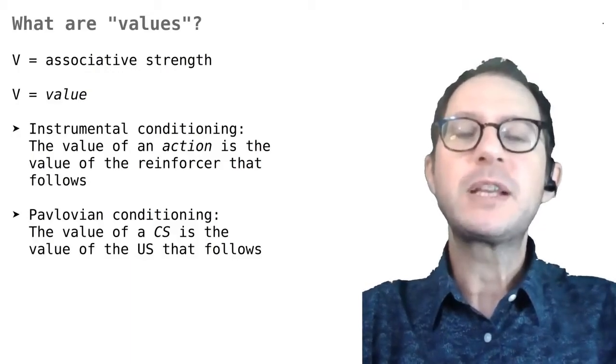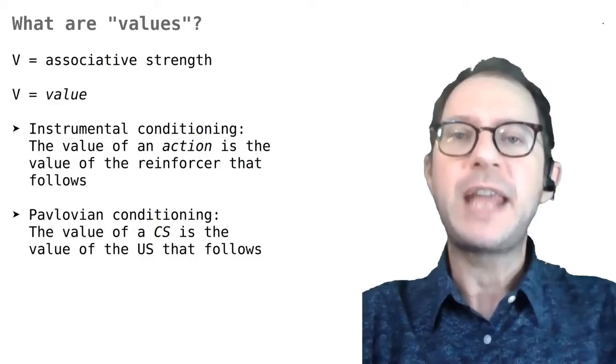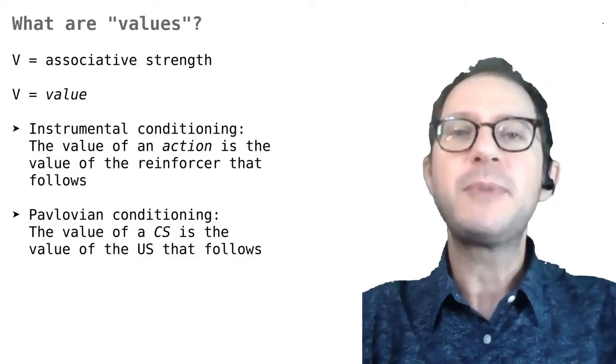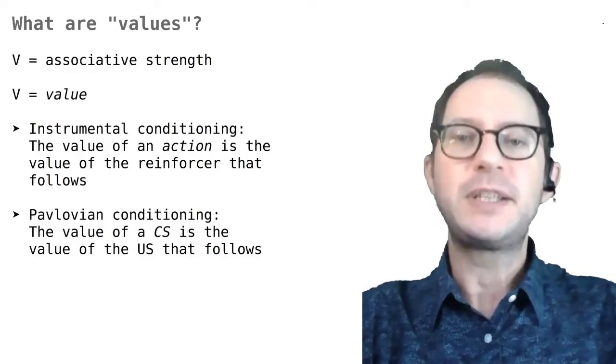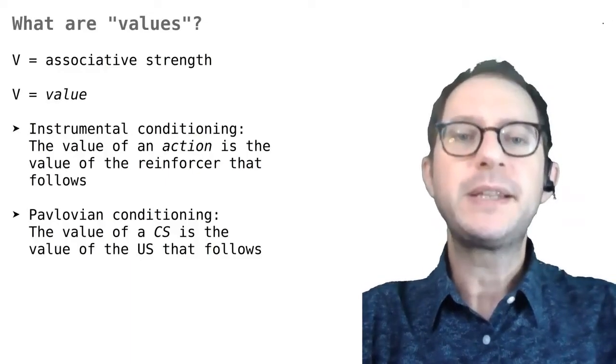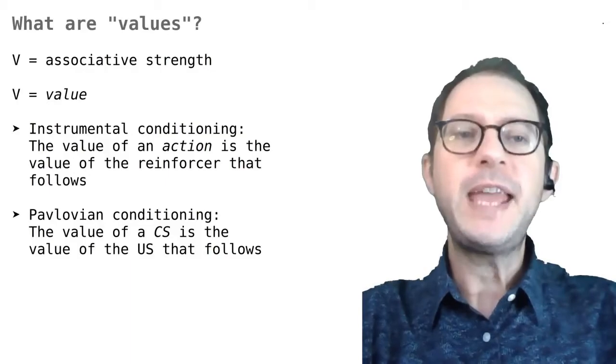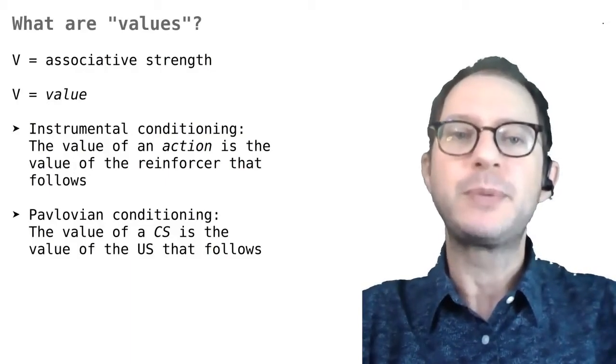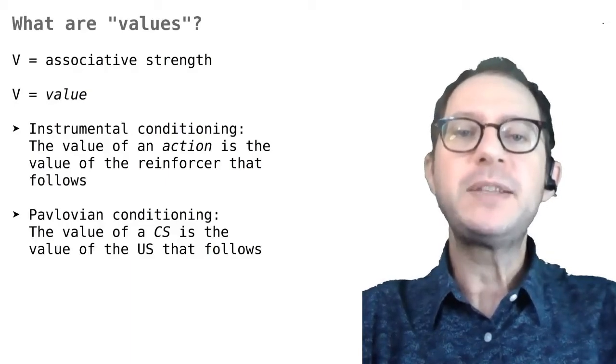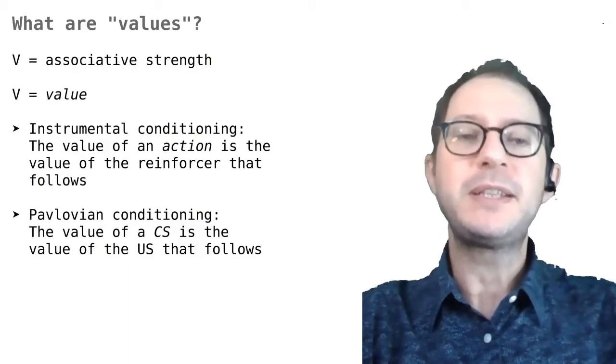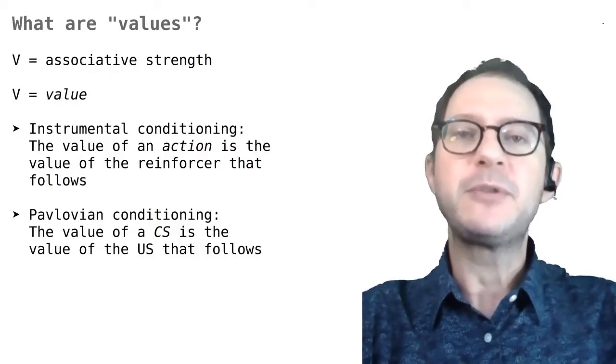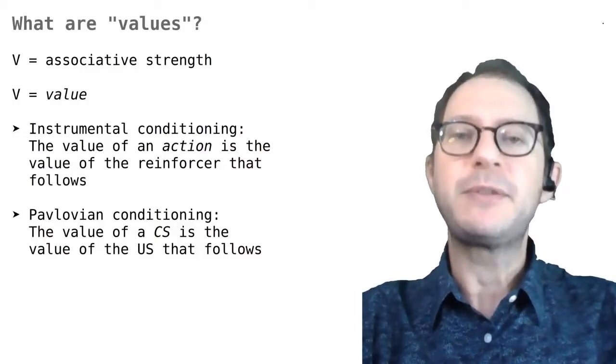We actually introduced the concept of value in our lesson on learning actions, when we saw how to use the Rescorla-Wagner model in instrumental conditioning. Let's go over it again. In instrumental conditioning, we can imagine that the animal is trying to understand what actions are most valuable to perform. An action that right away leads to food, for example, has positive value, and in fact, we can say that its value is exactly the value of the food, because that's what you get from doing the action.